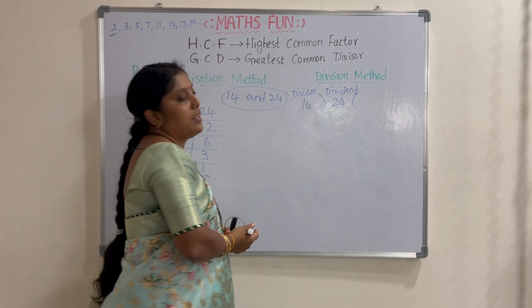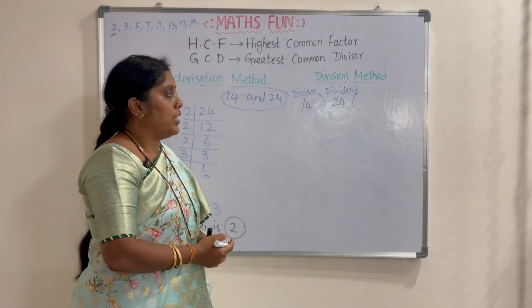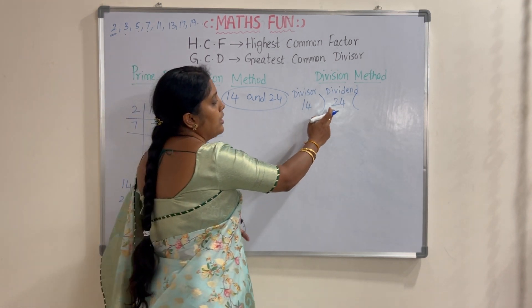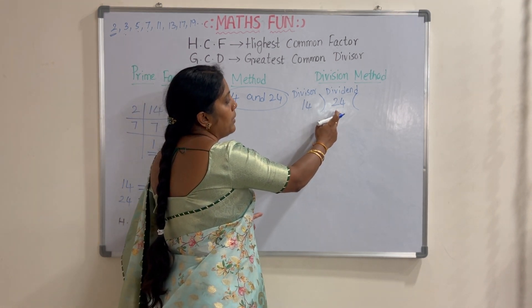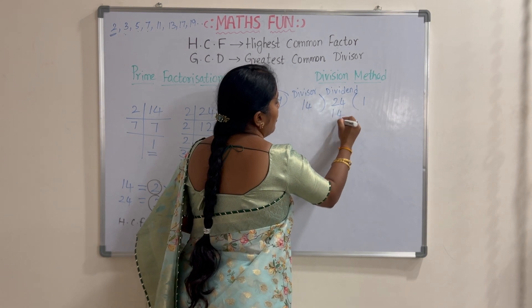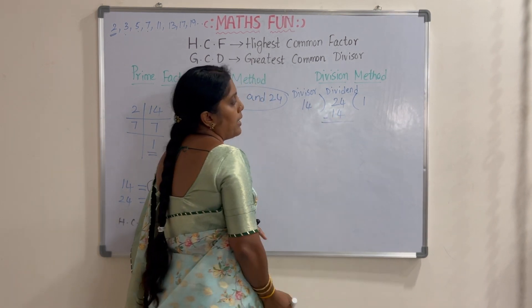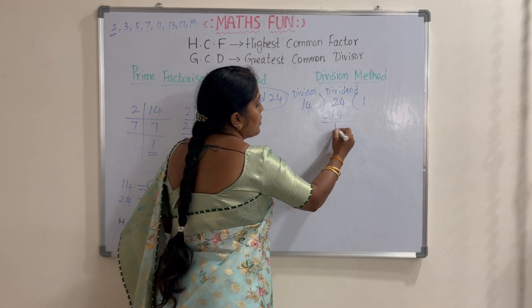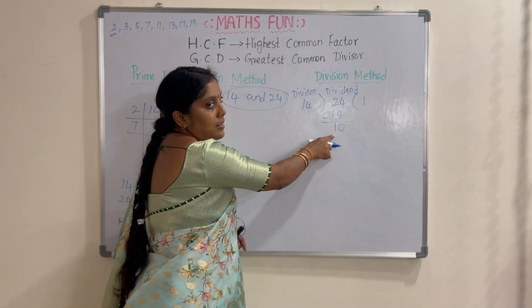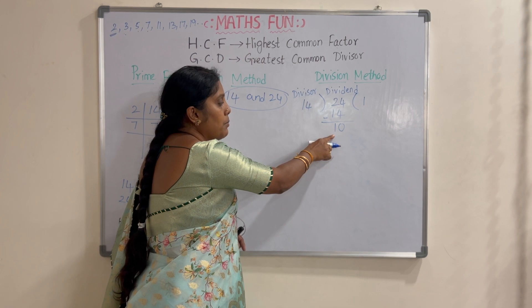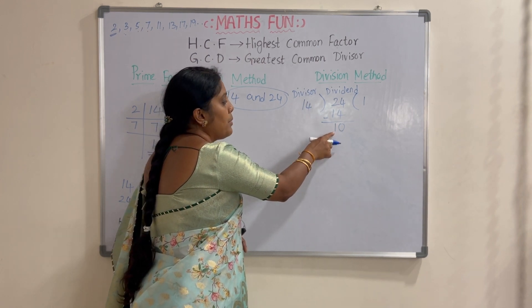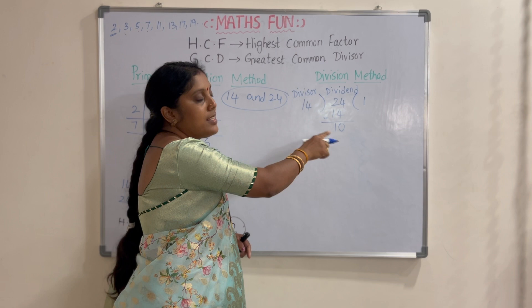We divide 24 by 14. 14 ones are 14; 14 twos are 28, which is bigger than 24, so we take 14 once. Subtracting: 24 minus 14 is 10. The remainder is 10. Since the remainder is not 0, this remainder will become the new divisor.